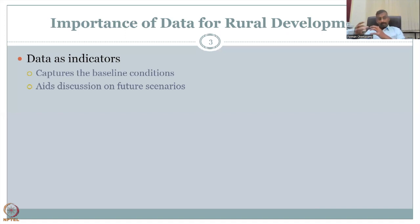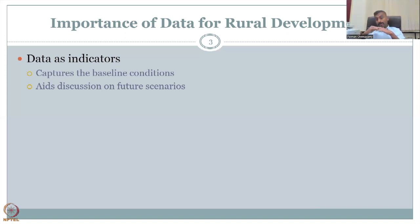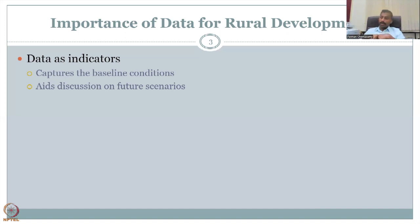Data is converted to information, and information can be converted to indicators. These indicators capture the baseline condition. Once you know the baseline, you can build scenarios. For example, if I know the population size, I would know how much food to produce to attain food security. If I don't know the population and consumption rate, how will we invest in food security?